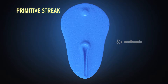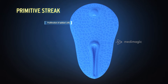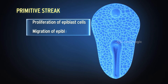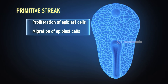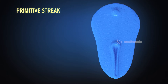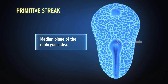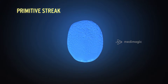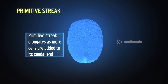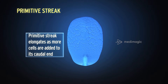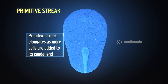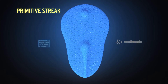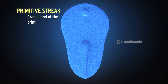The primitive streak results from the proliferation and migration of epiblast cells in the median plane of the embryonic disc. As the primitive streak elongates, more cells are added to its caudal end, towards the cranial end of the primitive streak.